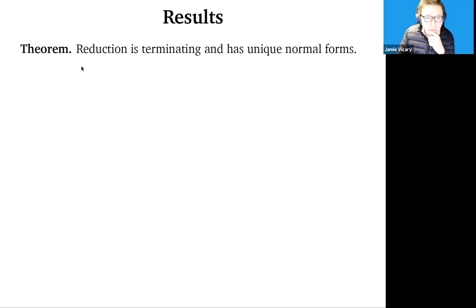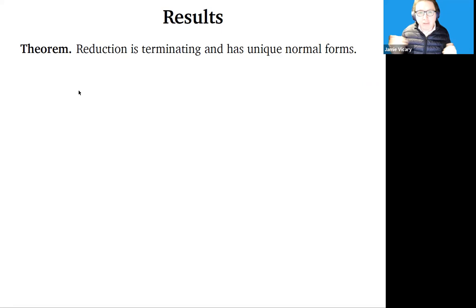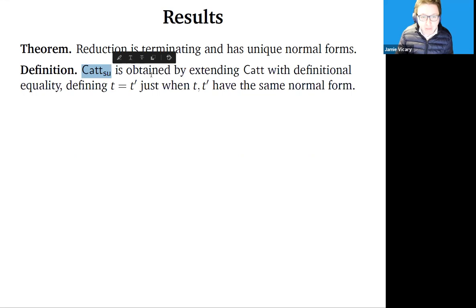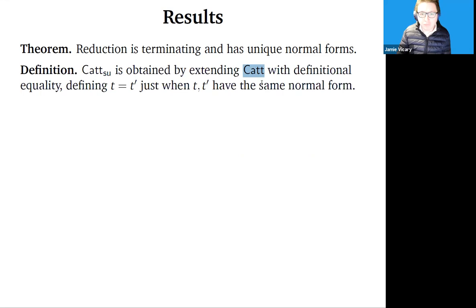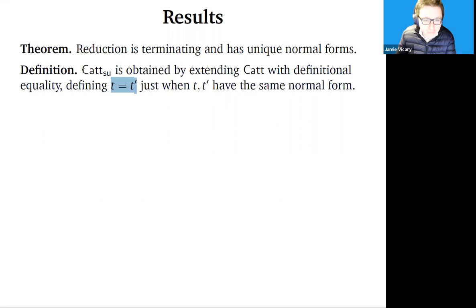Theorem: reduction is terminating and has unique normal forms. This means given any two terms, we can easily decide whether they're related by sequences of P-, D-, and L-reductions. We can now define the type theory CaT SU: take CaT (which had no definitional equality) and add definitional equality defined by saying two terms t and t' are judgmentally equal just when they have the same normal form.